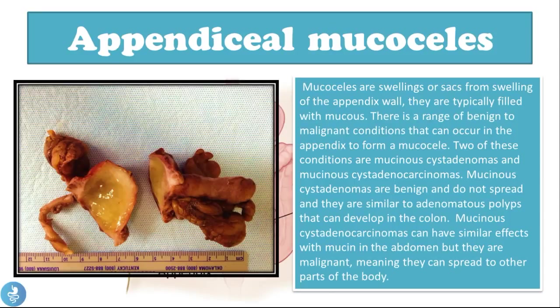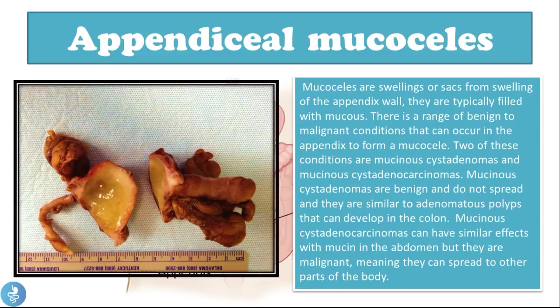Mucoceles are swellings or sacs from swelling of the appendix wall, typically filled with mucus — hence the name mucoceles. There is a range of benign to malignant conditions that can form a mucocele. Two of these conditions are mucinous cyst adenomas and mucinous cyst adenocarcinomas. Mucinous cyst adenomas are benign and do not spread, similar to adenomatous polyps in the colon. Mucinous cyst adenocarcinomas are malignant, meaning they can spread to other parts of the body.